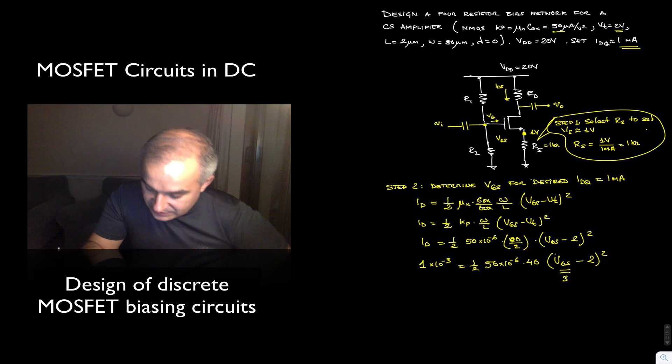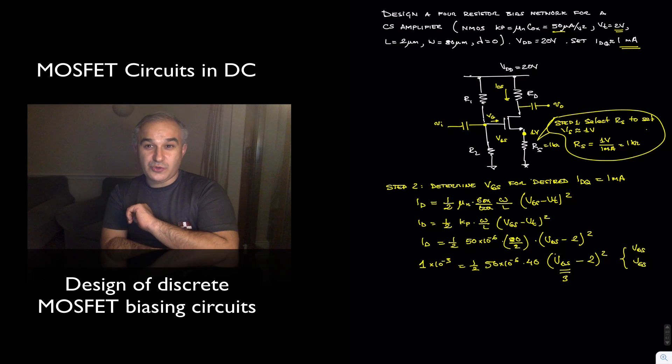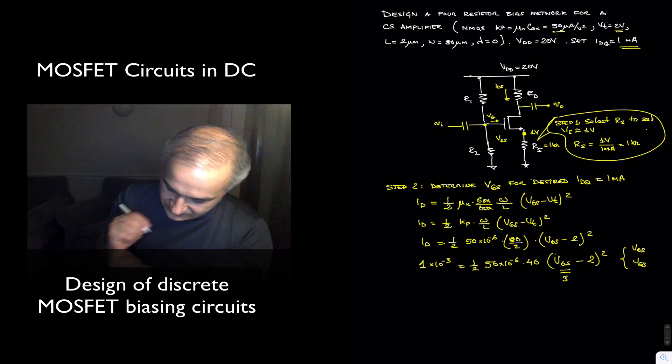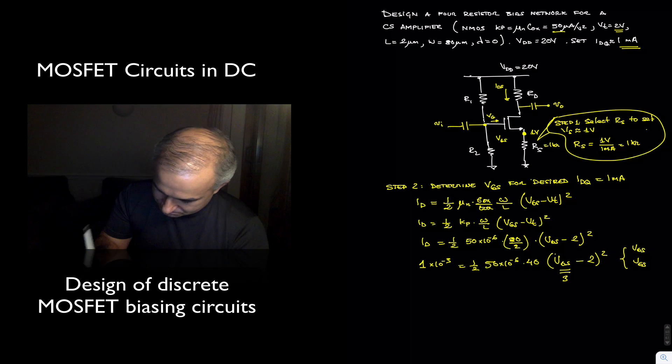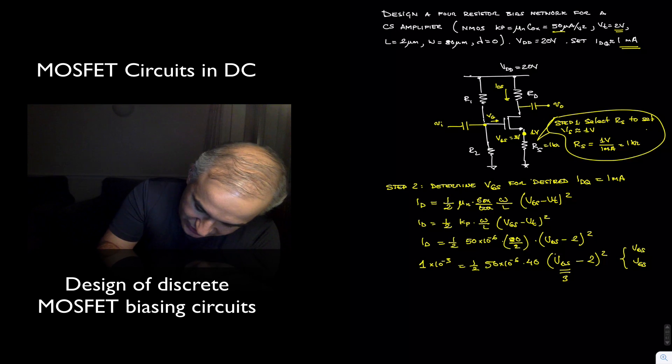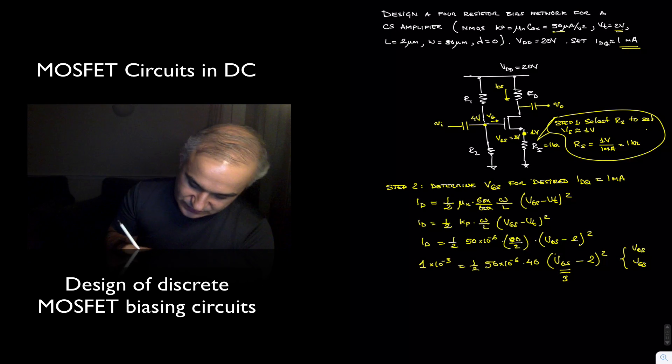But in general, we will solve it and we will get two solutions, two V_GS, one of which we are going to discard, the negative one. So in this case, we know that V_GS is 3 volts. And so, if V_GS is 3 volts, we know what the voltage is at the gate: 1 plus 3, 4 volts.